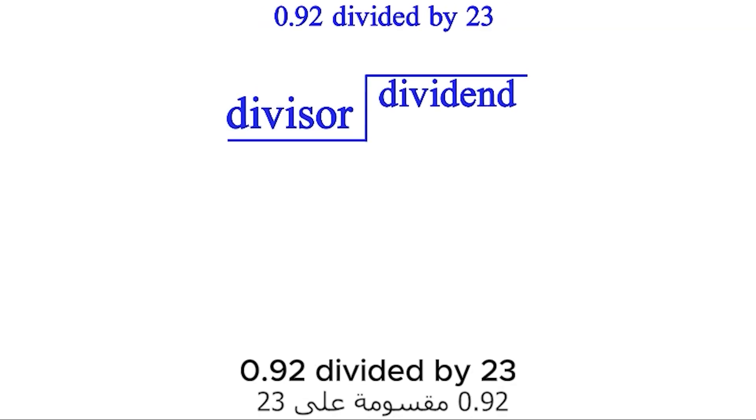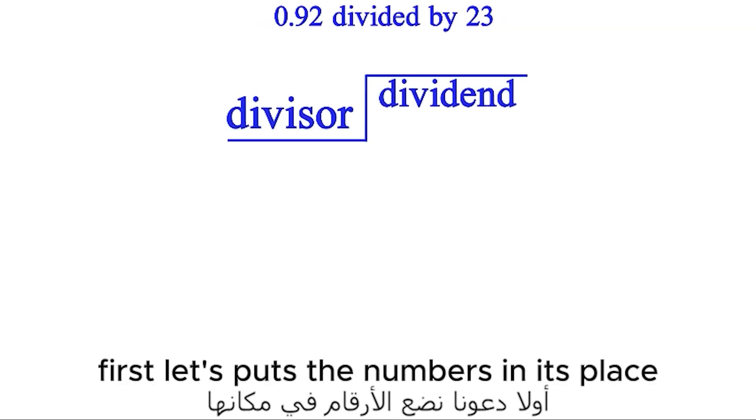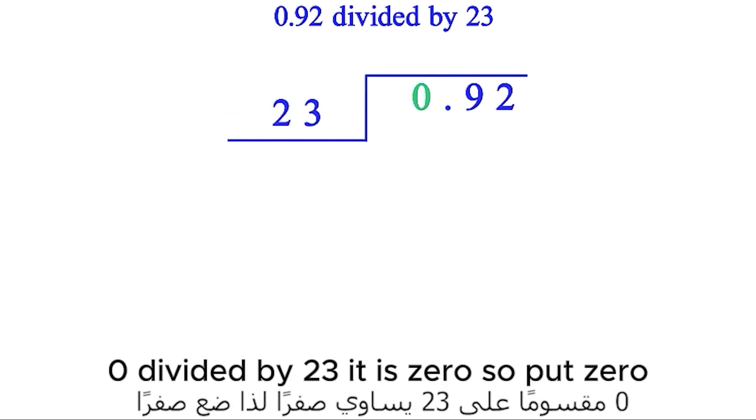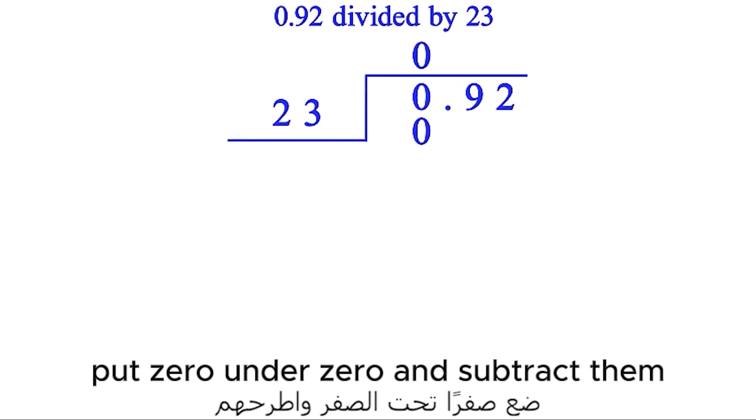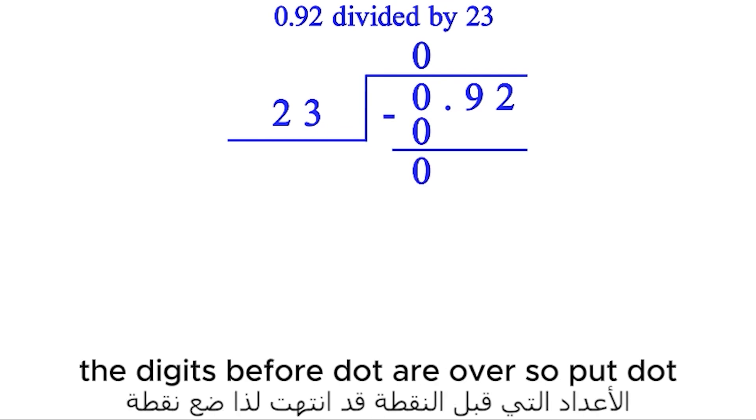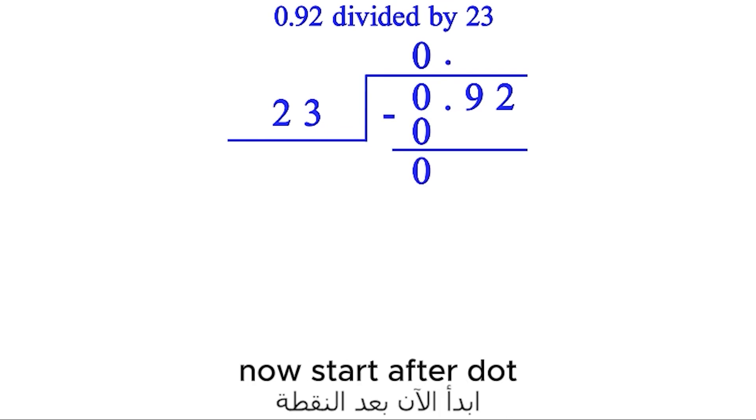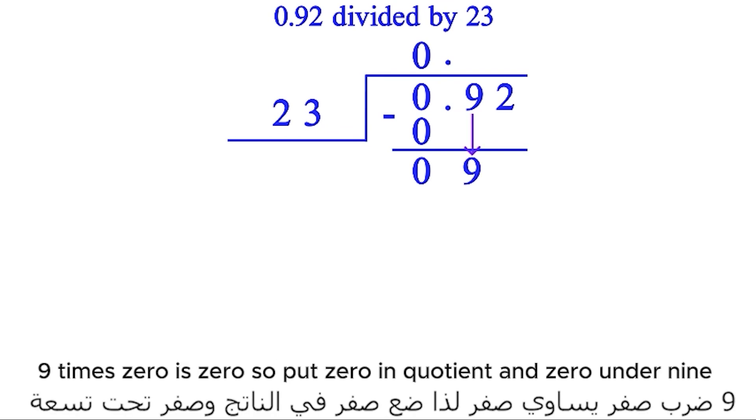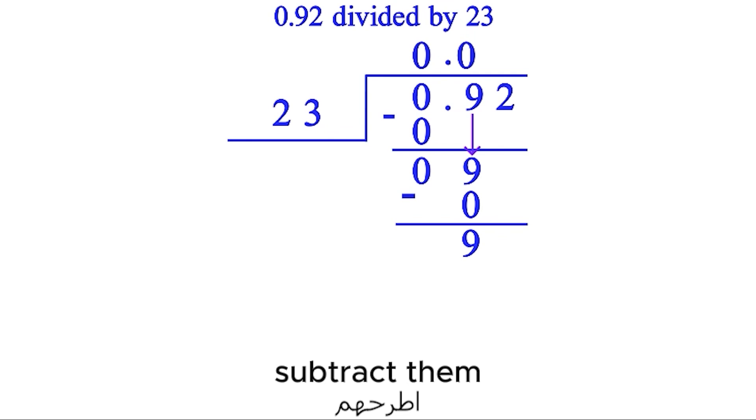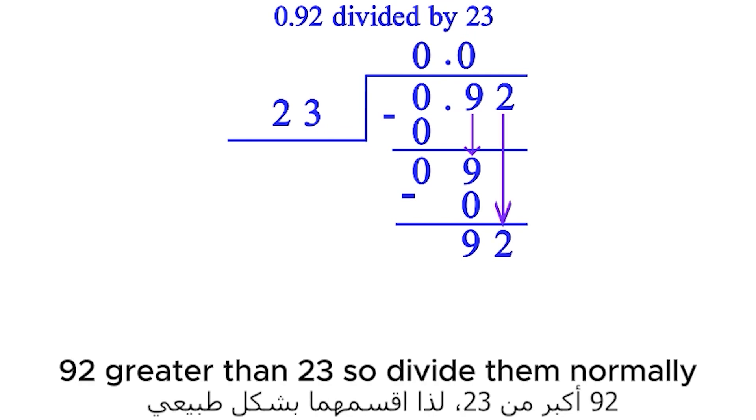Example 2: 0.92 divided by 23. First let's put the numbers in its place. Start divide before dot. 0 divided by 23 is 0, so put 0. Put 0 under 0 and subtract them. The digits before the dot are over, so put dot. Now start after dot. Bring down 9. 9 times 0 is 0, so put 0 in the quotient and 0 under 9. Subtract them. Bring down 2. 92 is greater than 23, so divide them normally.